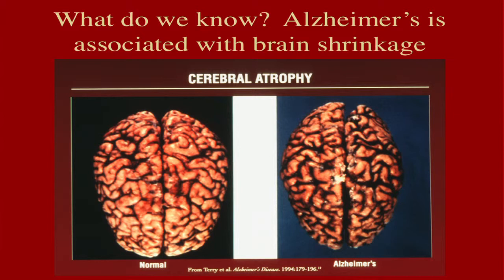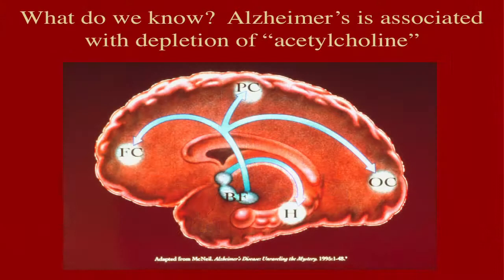You probably know that the brain works on the basis of chemicals called neurotransmitters — you've heard of serotonin in depression and dopamine in Parkinson's disease. In Alzheimer's disease, the cells that are particularly sensitive to the degenerative process are a group of cells that makes a brain chemical called acetylcholine. All the cells that make this particular chemical are planted at the base of the brain — called the basal forebrain — and they have branches going out to all the cortical areas, where all your thinking goes on.